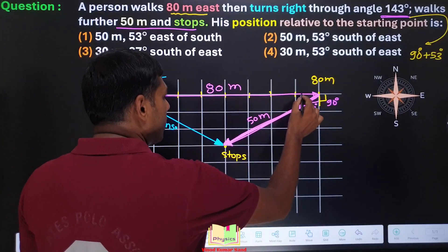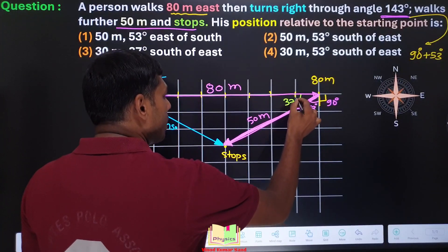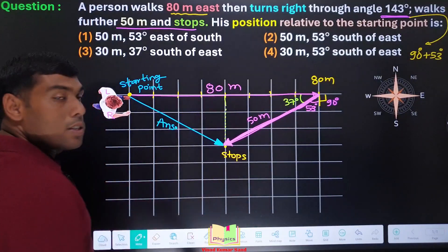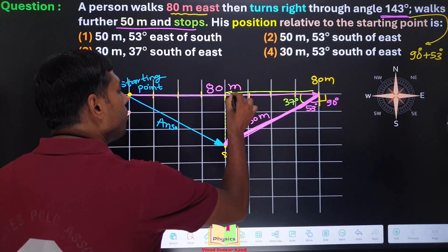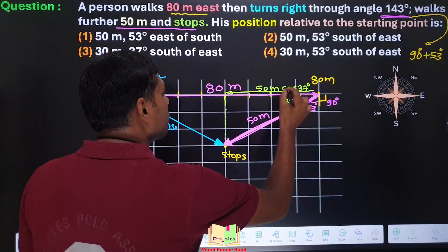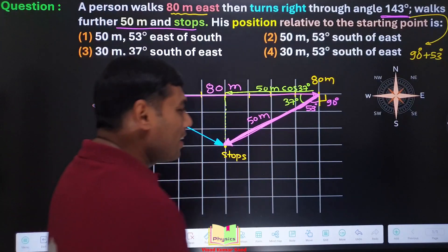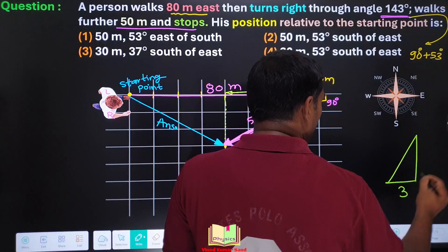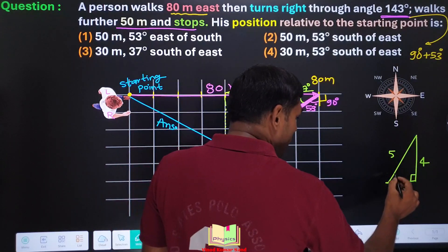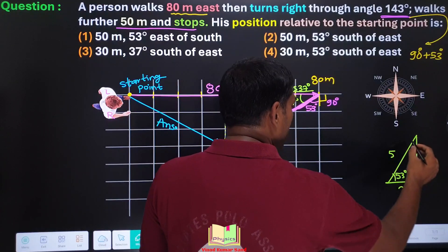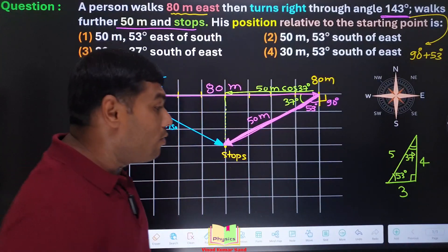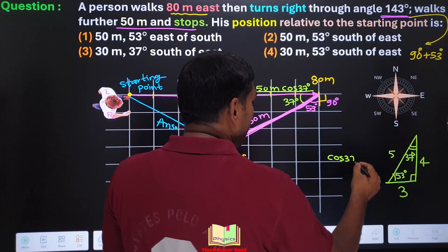Look at this 53 degrees, here the angle should be 37 degrees. This 50 meter will have a component along this direction, and we can tell that component will be 50 meter cos 37 degrees. How much is cos 37 degrees? We remember a triangle 3, 4, 5, right, Pythagorean triples. We know this triangle. In between the side 5 and 3, we consider this angle to be approximately 53, and this angle is approximately 37 degrees.